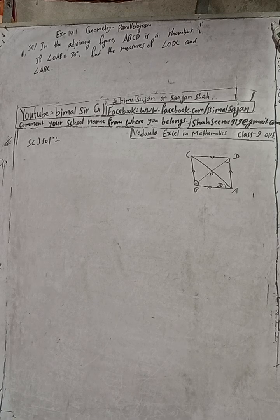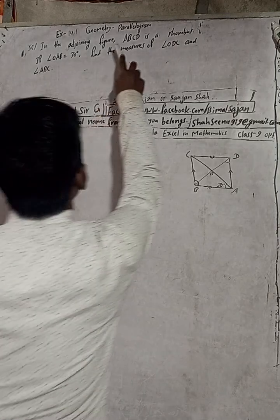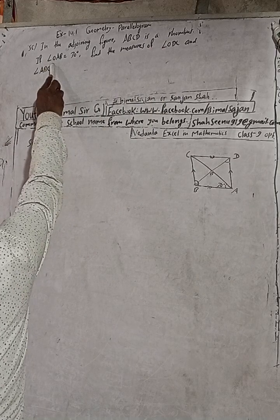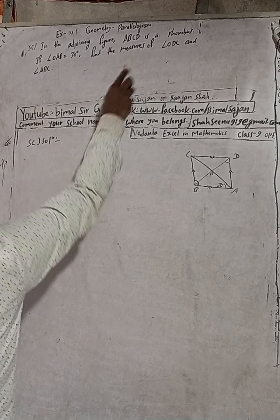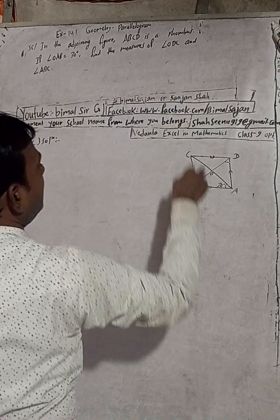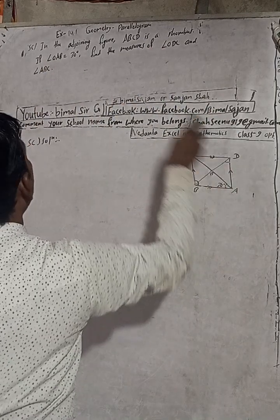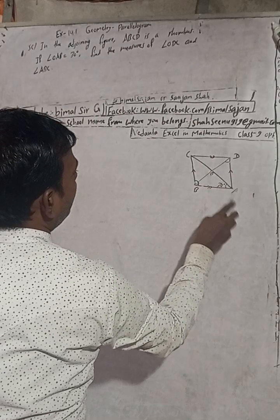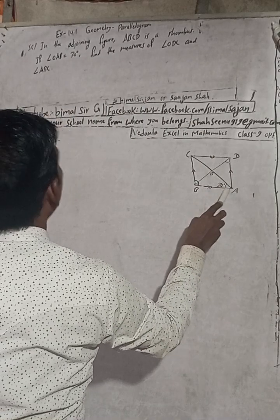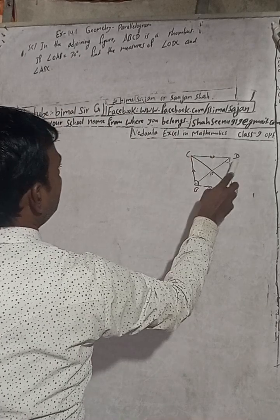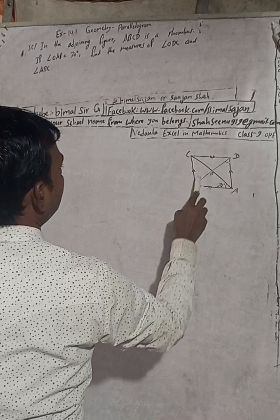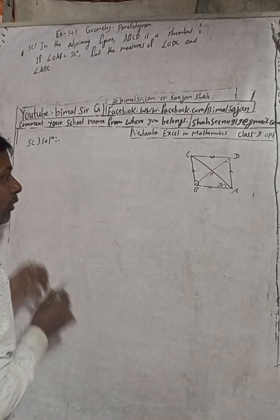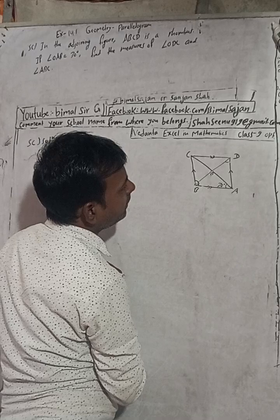Let's start the solution. In the adjoining figure, ABCD is a rhombus. If angle OAB is 40 degrees, find the measure of angle ODC and angle ABC.